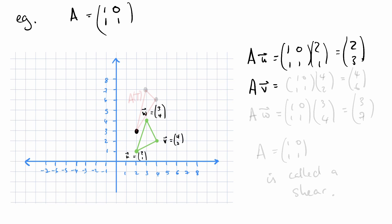AV is 1, 0, 1, 1, times 4, 2, which is 4, 6. That is here. And AW is 1, 0, 1, 1, 3, 4, which is 3, 7, which is right here.